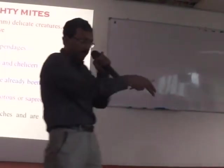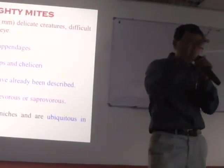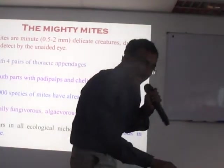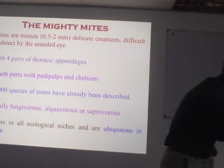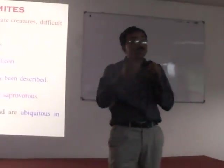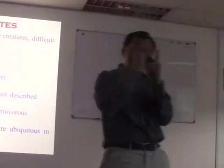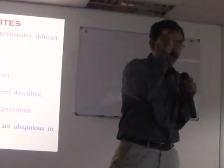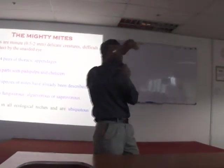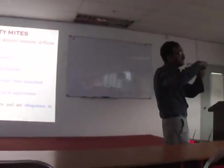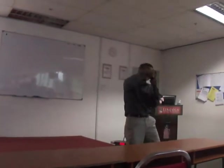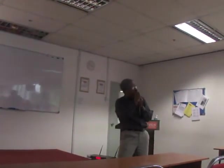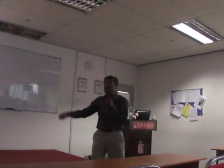In evolutionary biology, legs are the marker of progressive evolution. In insects it is usually three pairs; in case of mites, it is usually four pairs. Do you know the spider? Spider is an arachnid. So the mite looks like a small spider — that creature is actually inside the dust, which is the problem. Throughout the globe, 30,000 species of mites have already been described. They are usually fungivorous, algae-feeding, saprophagous — occurring in all ecological niches and ubiquitous in nature.